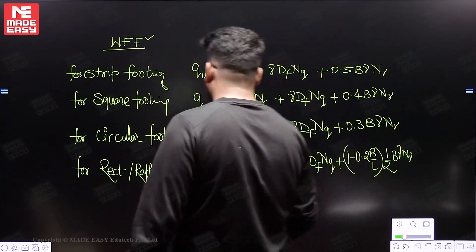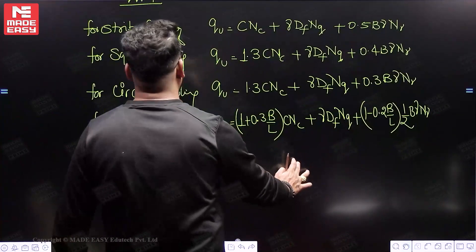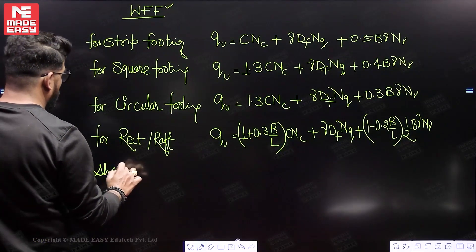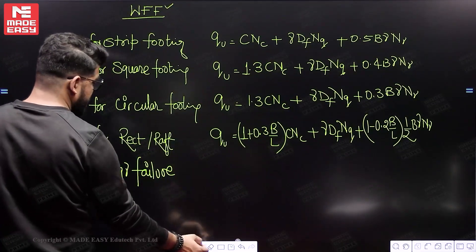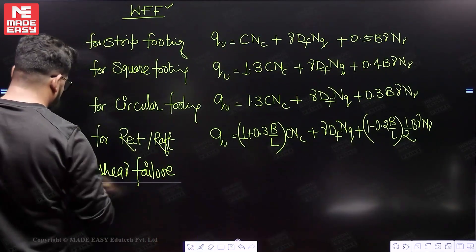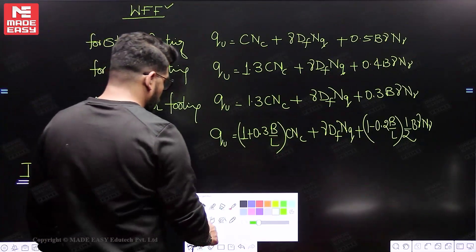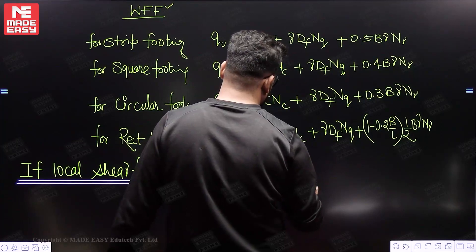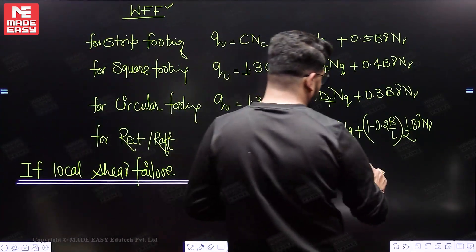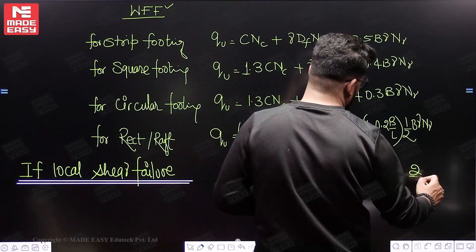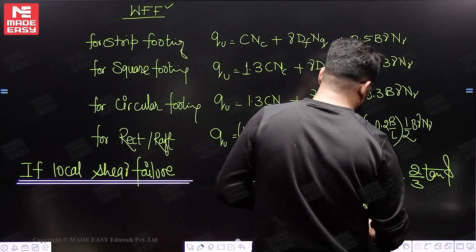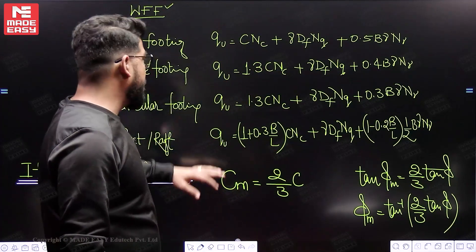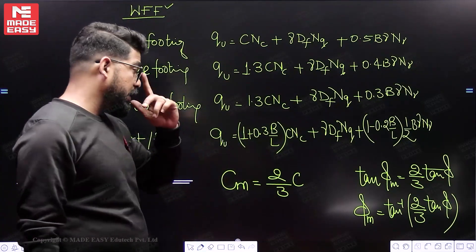But note that soil may also fail in local shear failure. If local shear failure is occurring, then C and φ will be modified. When talking about this modification: Cm will be used instead of C, where Cm = (2/3)·C. For φ, it is modified such that tan(φm) = (2/3)·tan(φ), so φm = tan⁻¹[(2/3)·tan(φ)]. The bearing capacity factors NC, NQ, Nγ will correspond to the modified φm.